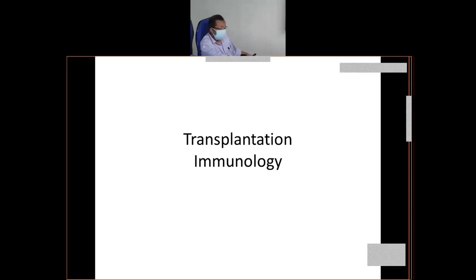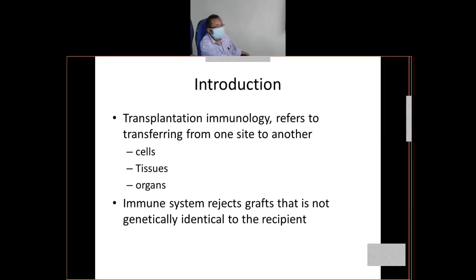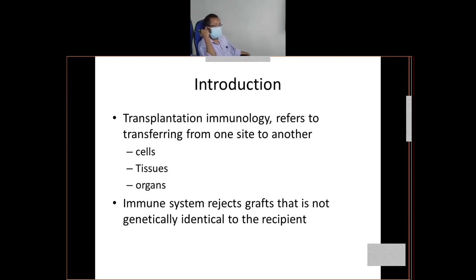So I will start transplantation immunology. I think you have gone through the presentation — quite a new topic, important also. You must already have a good idea about transplantation. You have heard about kidney transplant, which is quite common, and bone marrow transplant for leukemia and lymphoma patients. If you see transplantation, the need for it has been going on for centuries, but it was not possible because of lack of surgical skills and newer techniques.